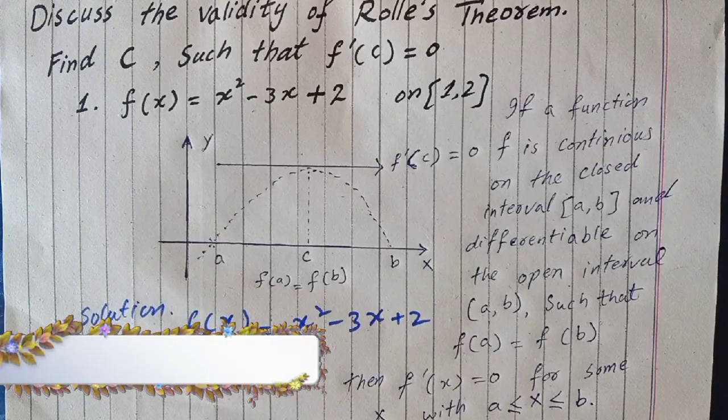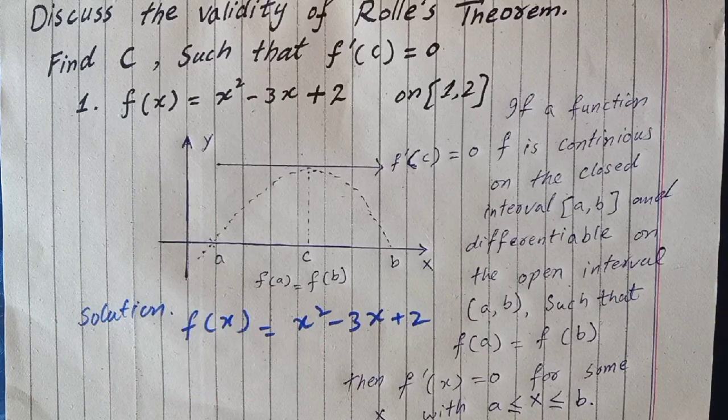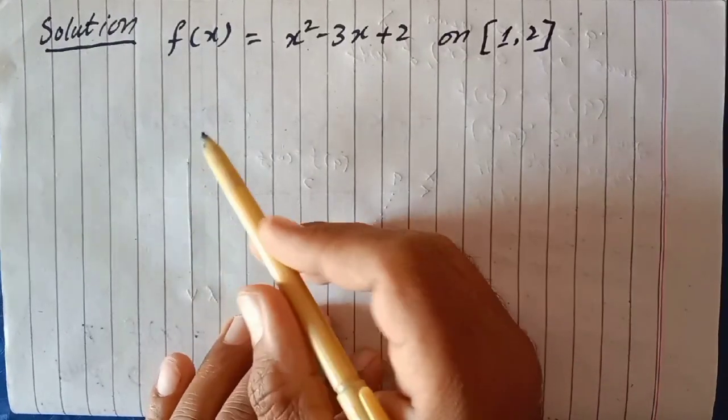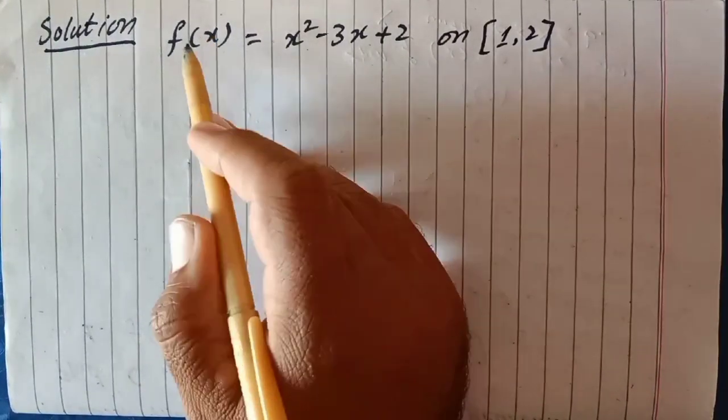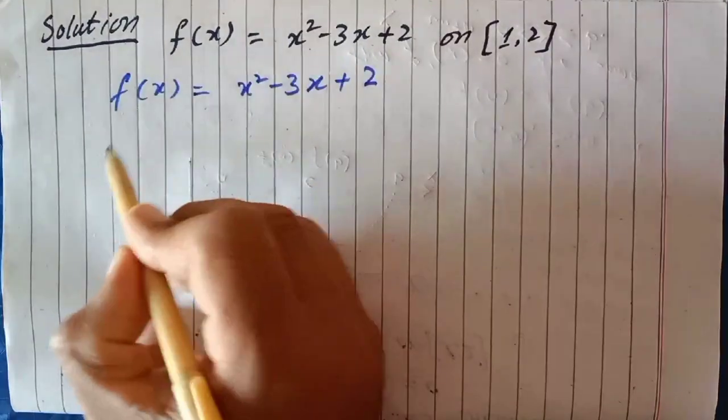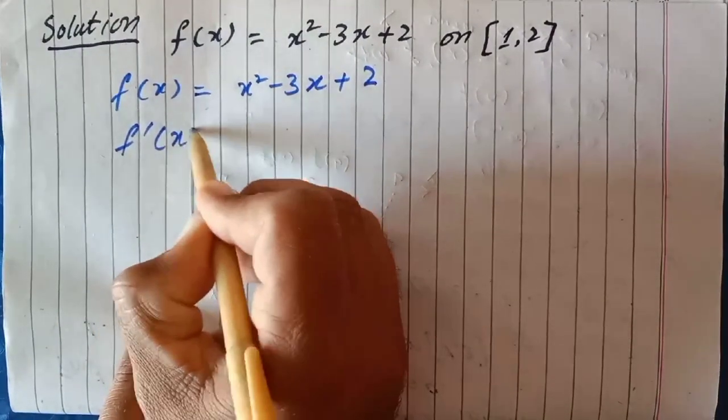Here you can note it. Now we solve it. The function f(x) = x² - 3x + 2. The derivative f'(x) = 2x - 3. Now f(1) is equal to